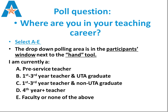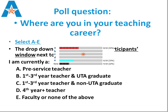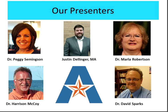Let's start with a poll: where are you in your teaching career? A through E — are you a pre-service teacher, first through third year teacher and UTA grad, first through third year teacher and non-UTA grad, fourth year and up teacher, or something else like faculty? I'm faculty so I'm going to select E. We're mostly pre-service teachers and we also have some faculty and other. Welcome, everyone.